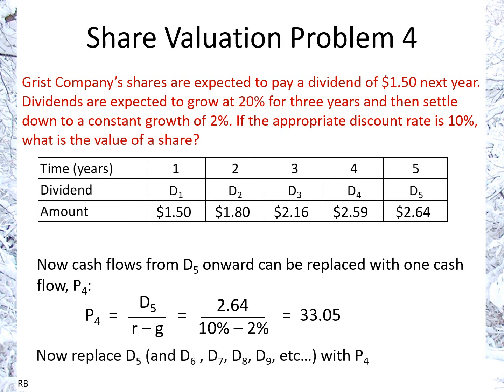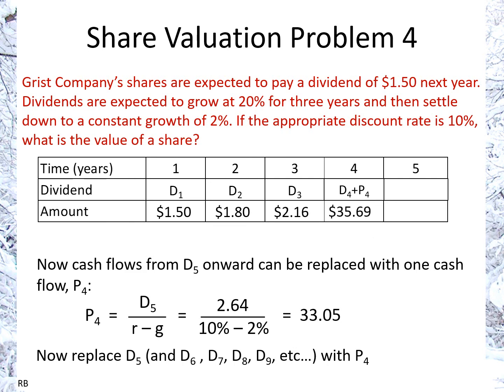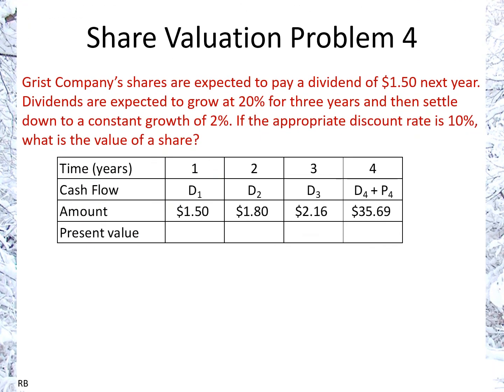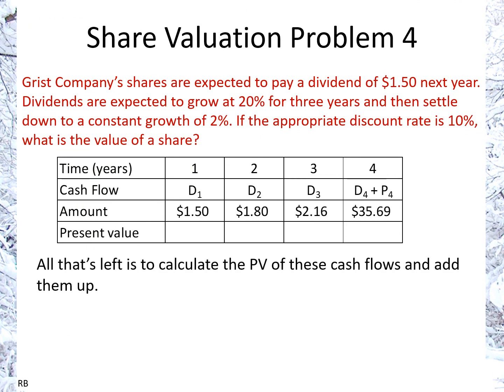Now we can replace all of those future dividends, including D5, with P4. So we have $2.59 plus $33.05, which is D4 plus P4, giving us $35.69. And now we have a simple, straightforward calculation.